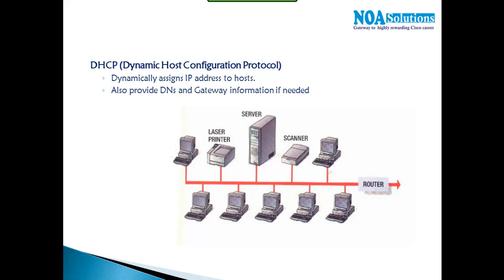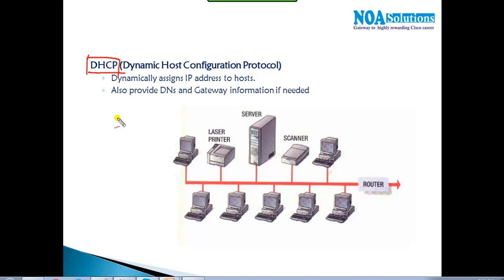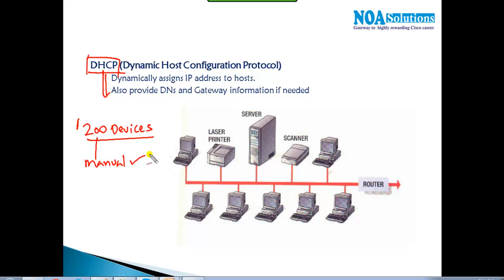DHCP — Dynamic Host Configuration Protocol — dynamically assigns IP addresses to all hosts. In an organization with 200 devices, manually assigning IP addresses, subnet masks, default gateways, and DNS server addresses to each device is not practical and not scalable. So we use a centralized DHCP server to handle this automatically.